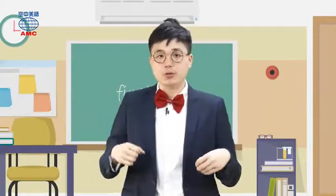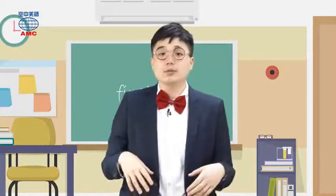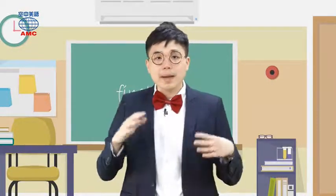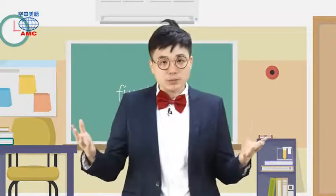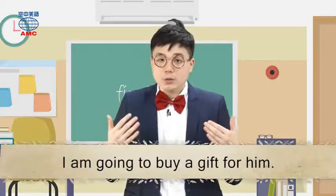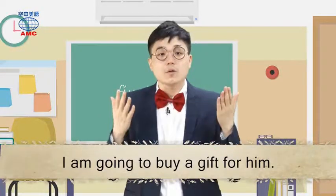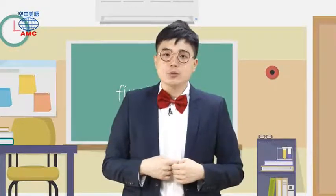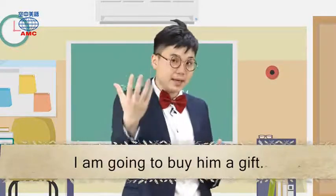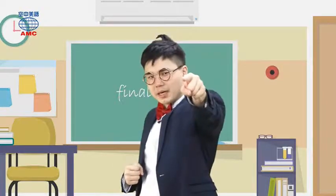有一个特殊的授语动词要注意，那就是 buy。当我们使用 buy 的时候，不是使用介系词 to，而是要使用 for：buy something for somebody。例如，阿笠博士的生日要到了，I am going to buy a gift for him。当然也可以改写成不用介系词的版本：I am going to buy him a gift。顺序不同，但意思完全一样。